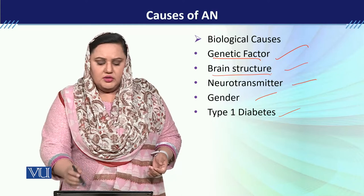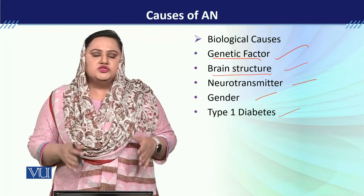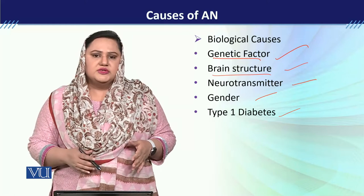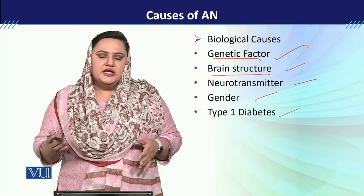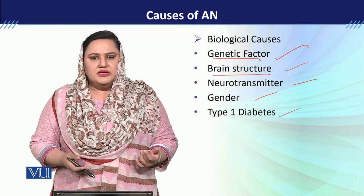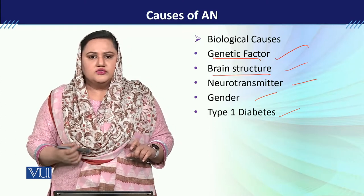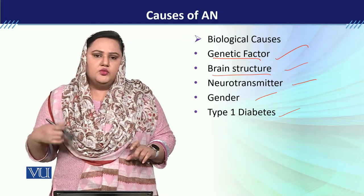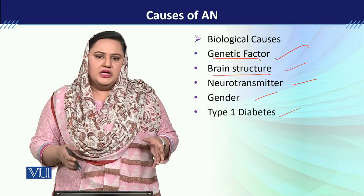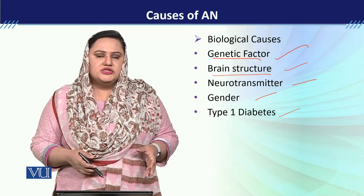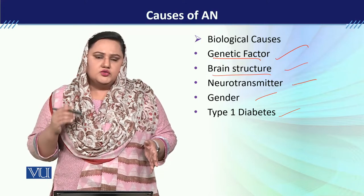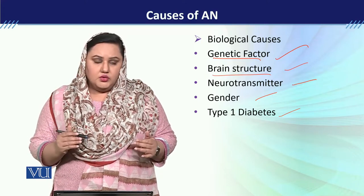Then we will talk about brain structure. When we talk about brain structure, the lateral hypothalamus is involved in eating behavior. Experiments on rats showed that if that area is stimulated, the rats' eating behavior would start. This means that in anorexia patients, the stimulation of the lateral hypothalamus may be low.